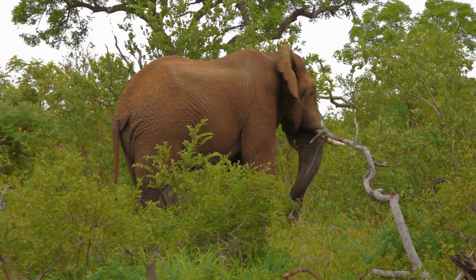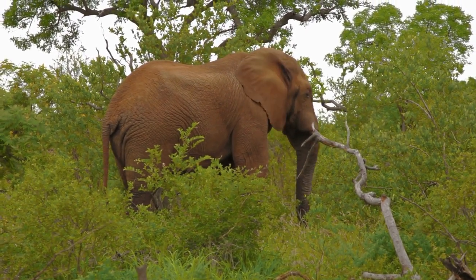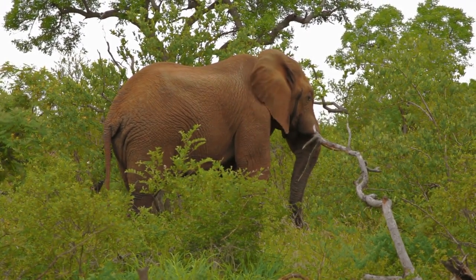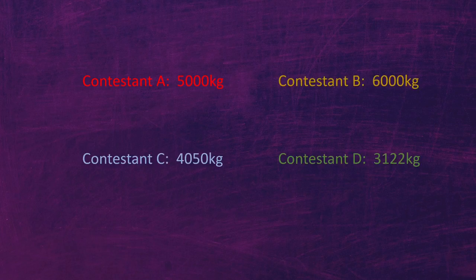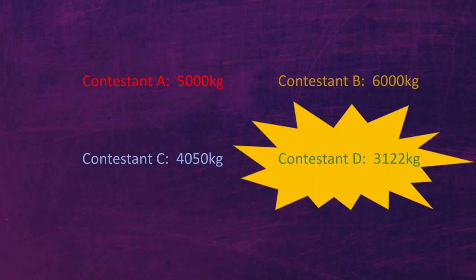In the first scenario, let's pretend there are four contestants that have to guess the weight of an elephant on screen. These four contestants cannot talk to each other, and only one of them actually knows the weight of the elephant. Here are their answers for contestants A, B, C, and D. Which contestant do you think has the most confidence in their answer, and therefore is most likely the one who actually knows the weight of the elephant? It would be contestant D.